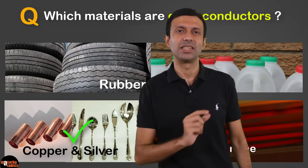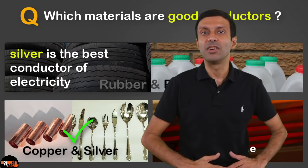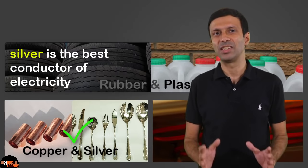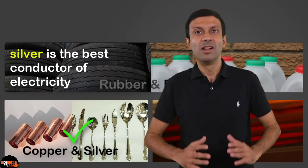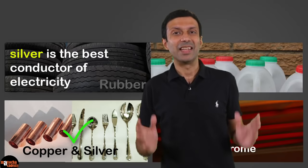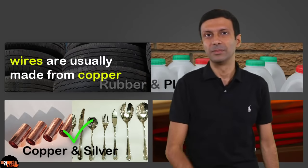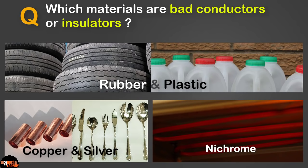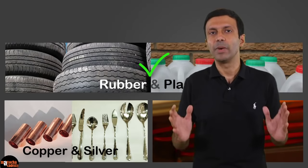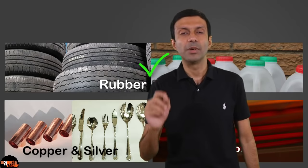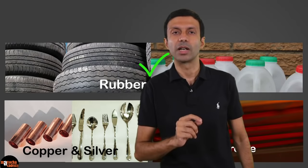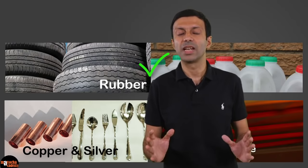Did you know that silver is the best conductor of electricity? We could make wires from silver, but that would be very expensive, so wires are usually made from copper. Rubber and plastic are insulators — they have a very very high resistance and so are bad conductors of electricity. That's why electrical switches are made of plastic, and we should wear rubber slippers or shoes when working with electrical equipment so that we don't get a bad shock.